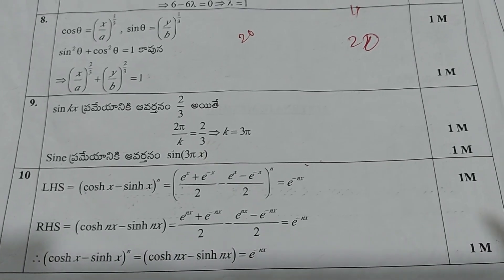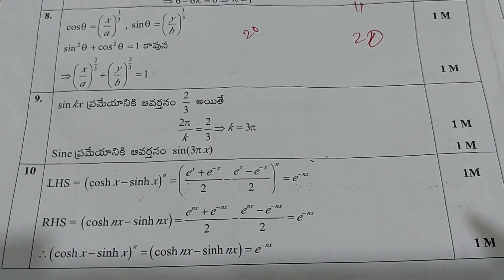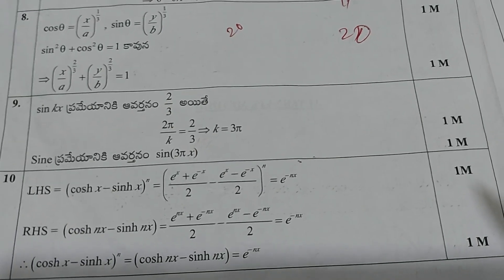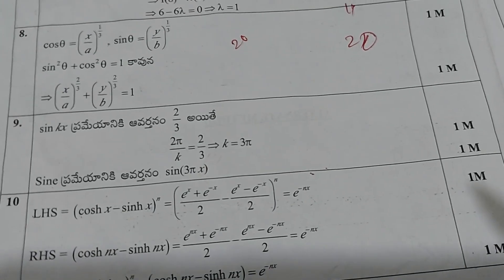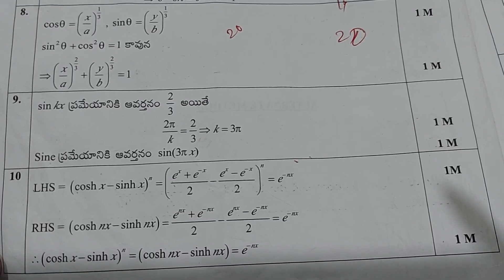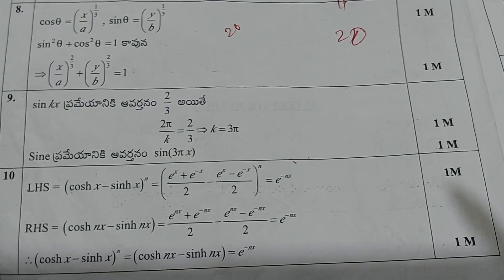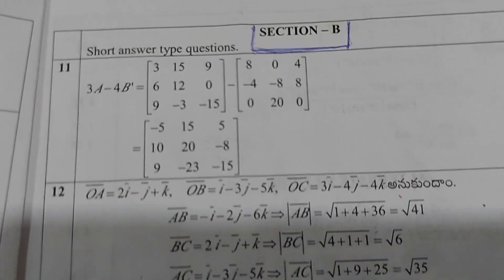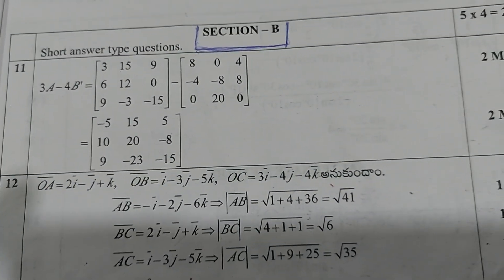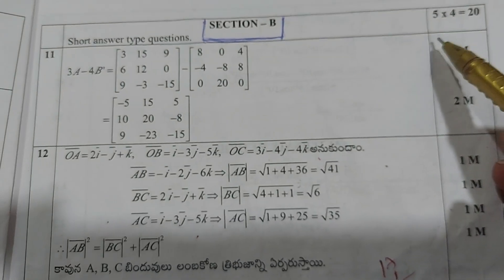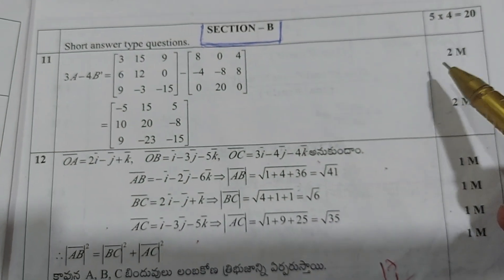So VSAQs — very short answer questions, Section A — is over. This is the scheme of valuation provided by TSBIE for the latest, recently held March paper. Now we move on to Section B: 4-mark questions, 5 we have to write, so 5 into 4 is 20 marks.